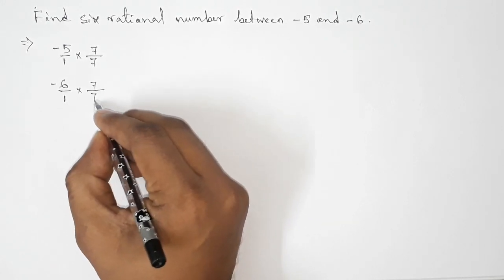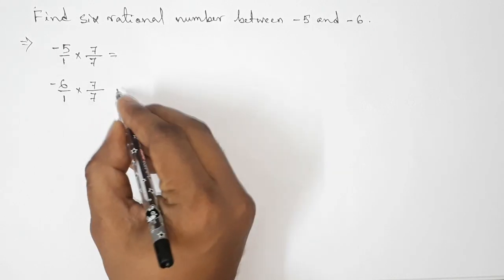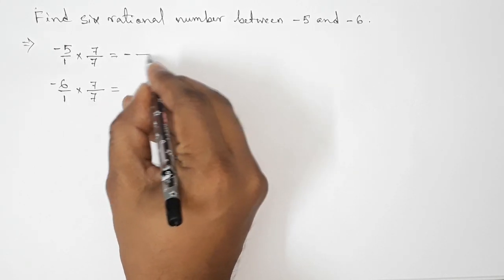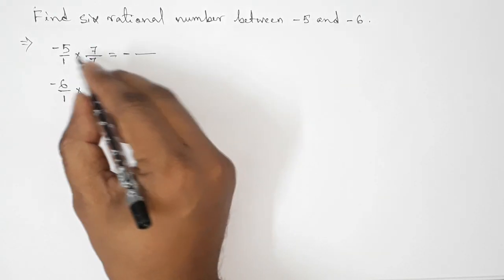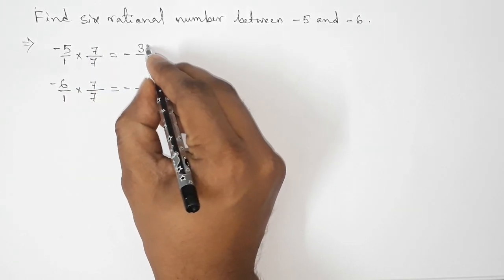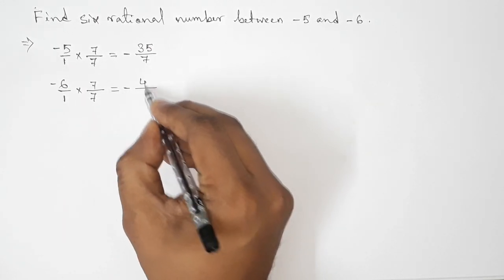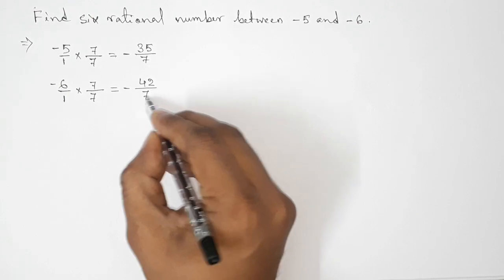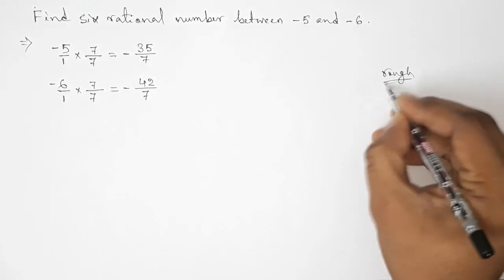So now simplifying all this. So here first, this is minus thirty-five by seven and here minus forty-two by seven. So now roughly discussing here some important calculation.